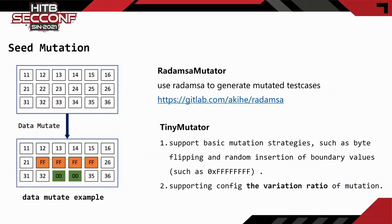Next, let's take a look at the implementation of the seed mutation module. The seed mutation randomly replaces some data in the test case. Currently, there are two seed mutation modules in TravelFuzzer: the random EMSA mutator and the tiny mutator. Random EMSA mutator encapsulates random EMSA, an open-source seed mutation tool. Tiny mutator is a simpler tool including basic mutation strategies such as byte flipping and bound value replacement. Unlike random EMSA mutator, tiny mutator supports configuring the ratio of seed mutation so that it only mutates a small part of the test case. The comparison of these two mutators will be introduced later.